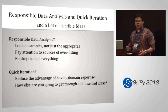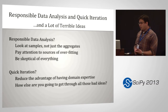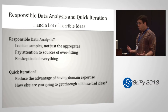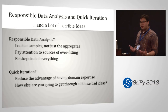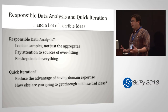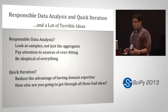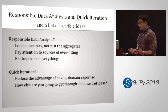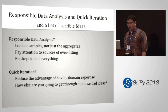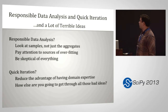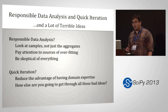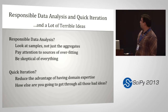The secret to my success was responsible data analysis and quick iteration — plus a lot of really bad ideas, but that's where the quick iteration part comes in. Responsible data analysis means taking time to look at individual samples, not just the aggregates, to see what's really going on. Pay attention to sources of overfitting — be skeptical. If you do a really good job, you might want to verify you haven't done something wrong. Quick iteration reduces the time advantage that domain expertise provides, and it's how you get through all those bad ideas.